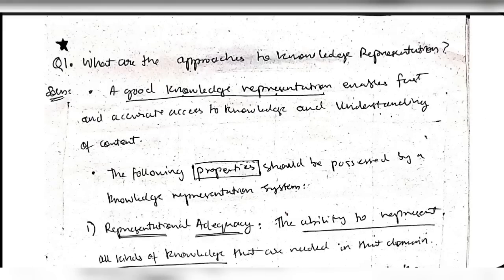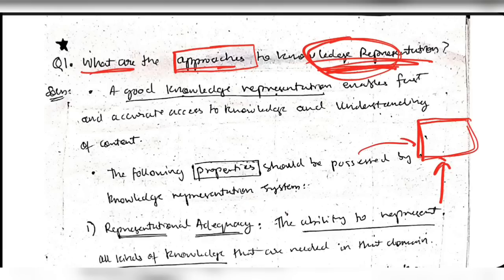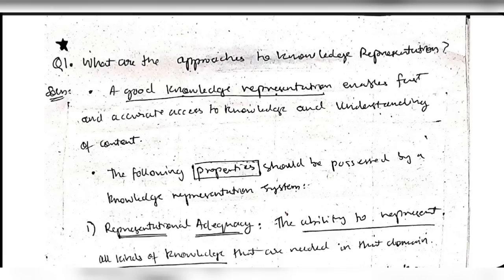The next super important question - high weightage from exams - is: what are the approaches for knowledge representation? Representing knowledge in a standard form is called knowledge representation. There are four ways of approaching this, but before knowing the approaches you need to know some properties of knowledge representation.